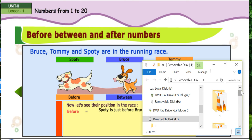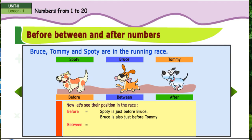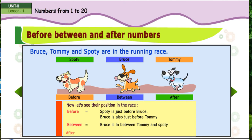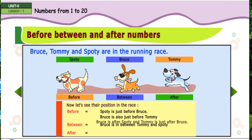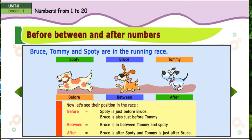Spotty is just before Bruce. Bruce is also just before Tommy. Bruce is in between Tommy and Spotty. Bruce is after Spotty and Tommy is just after Bruce.